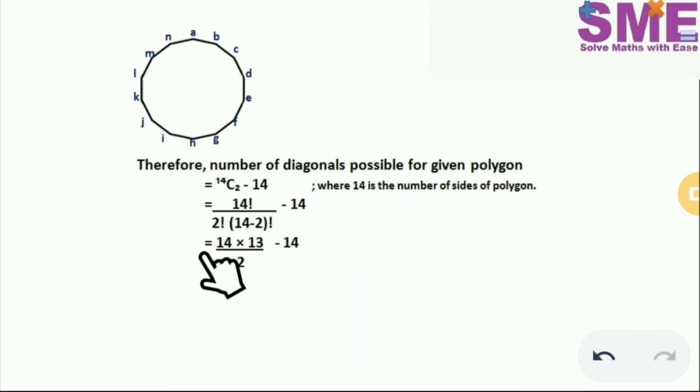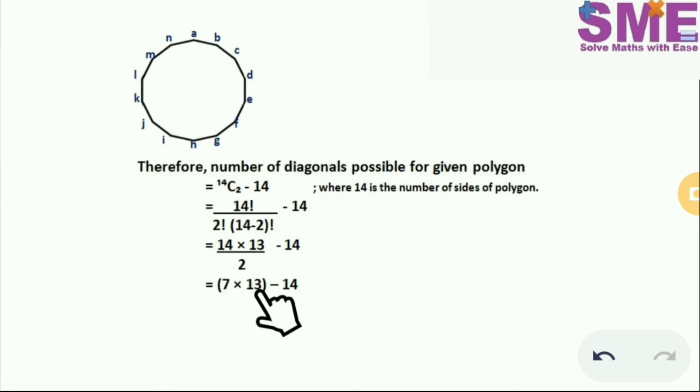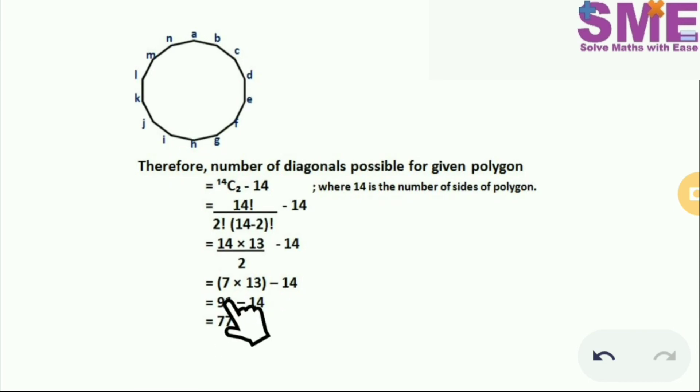Further simplifying we get 14 into 13 divided by 2 minus 14. We get 7 into 13 minus 14. We get 91 minus 14. So the final figure is 77.